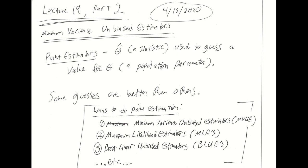Last time we talked about point estimators. A point estimator is a statistic, theta hat, used to guess a value for theta, a population parameter. There is some population parameter you are interested in — commonly mean or variance, but also things like mode or maximum or second moment — and you have a little machine which generates guesses as to what that population parameter actually is. You feed it a sample and it spits out its best guess for the value of the population parameter. These point estimators are statistics — more specifically, ways of turning samples into guesses about population parameters — but some guesses are better than others.